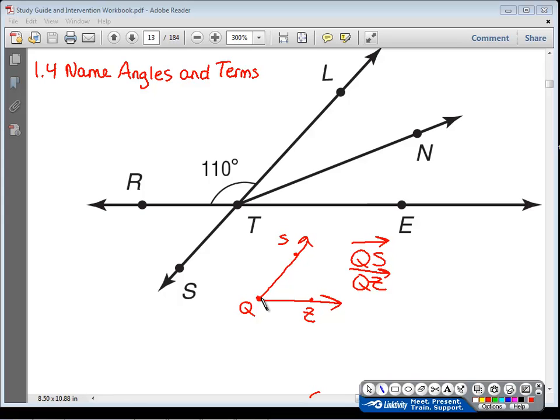One way to name this angle would be simply by an angle symbol and the letter Q, the vertex point. We also could name this angle SQZ, or another way would be angle ZQS. Important to keep the Q in the middle of your three letters, so you can change the order, but the Q needs to be in the middle. Sometimes angles are also given a number right here in the interior, so we could also even call this angle 1 or whatever number is in that area, that interior angle.